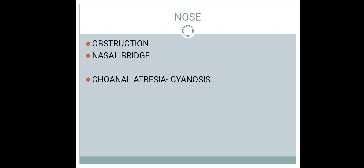Newborns are obligatory nasal breathers — they can only breathe through the nose. If both nostrils are obstructed through choanal atresia or any obstruction, the baby cannot breathe properly and will cry. While crying, the baby takes inspiration and the cyanosis disappears. This cycle of cyanosis appearing and disappearing is called cyclical cyanosis, and indicates bilateral choanal atresia.